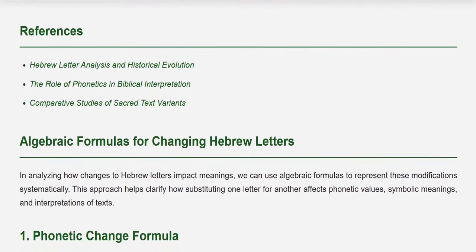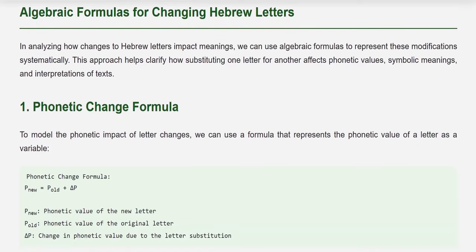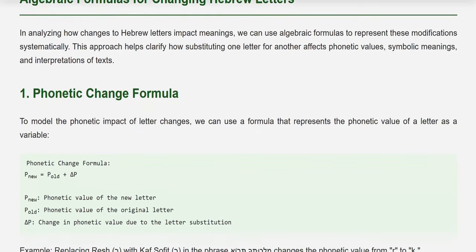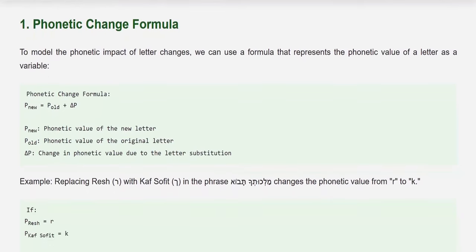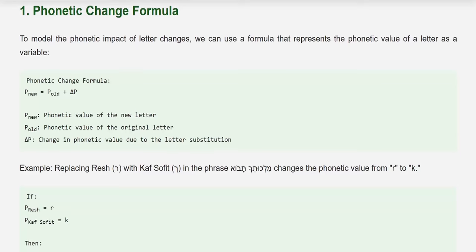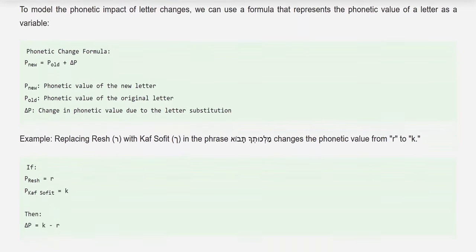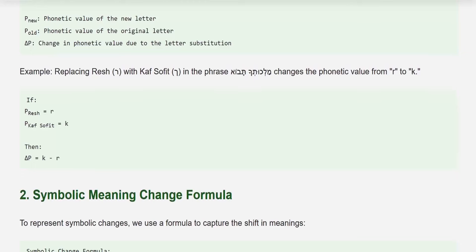Algebraic Formulas for Changing Hebrew Letters. In analyzing how changes to Hebrew letters impact meanings, we can use algebraic formulas to represent these modifications systematically. This approach helps clarify how substituting one letter for another affects phonetic values, symbolic meanings, and interpretations of texts. 1. Phonetic Change Formula: To model the phonetic impact of letter changes, we use a formula representing the phonetic value of a letter as a variable: P_new = P_old + ΔP, where P_new is the phonetic value of the new letter, P_old is the phonetic value of the original letter, and ΔP is the change in phonetic value due to the letter substitution. Example: Replacing Resh with Kaf Sofit changes the phonetic value from R to K; P_Resh = R, P_Kaf Sofit = K, so ΔP = K − R.